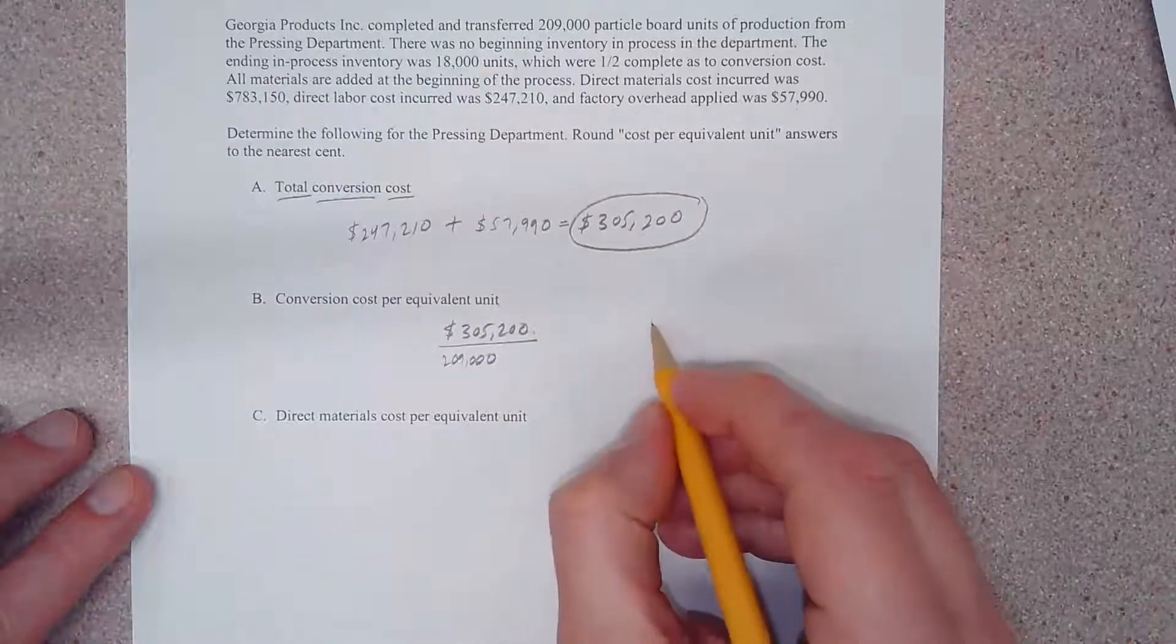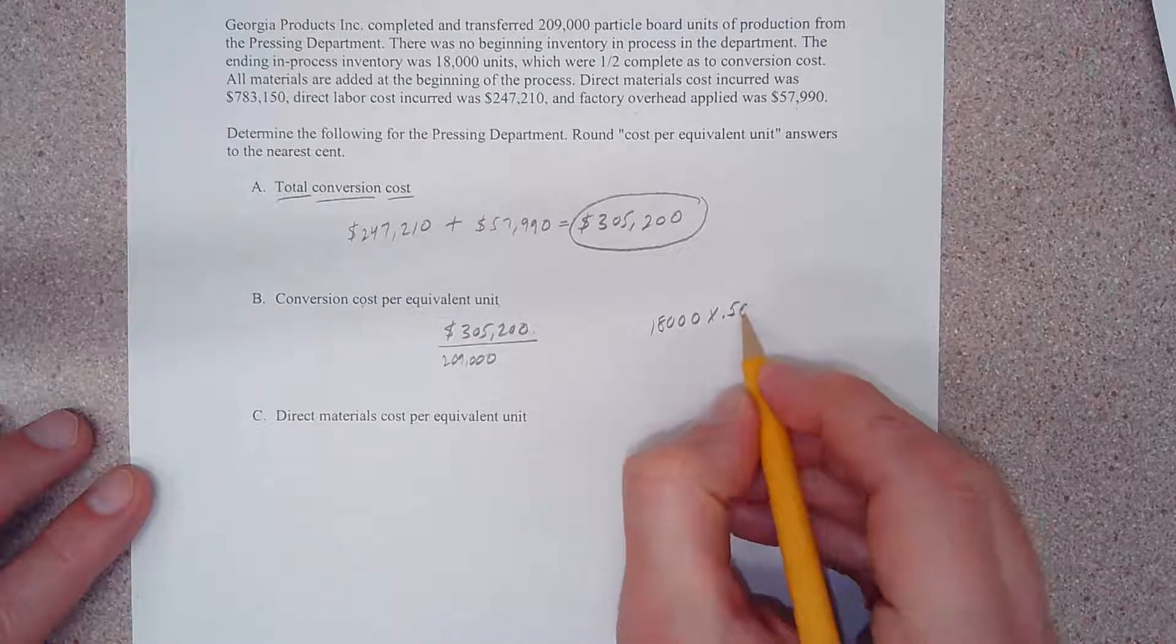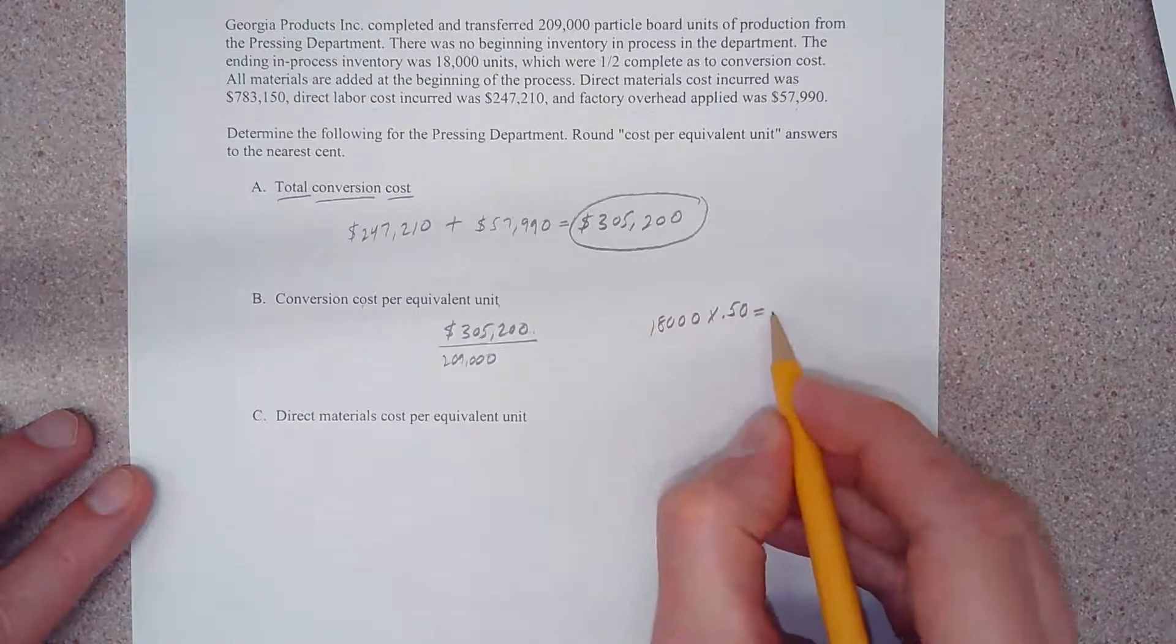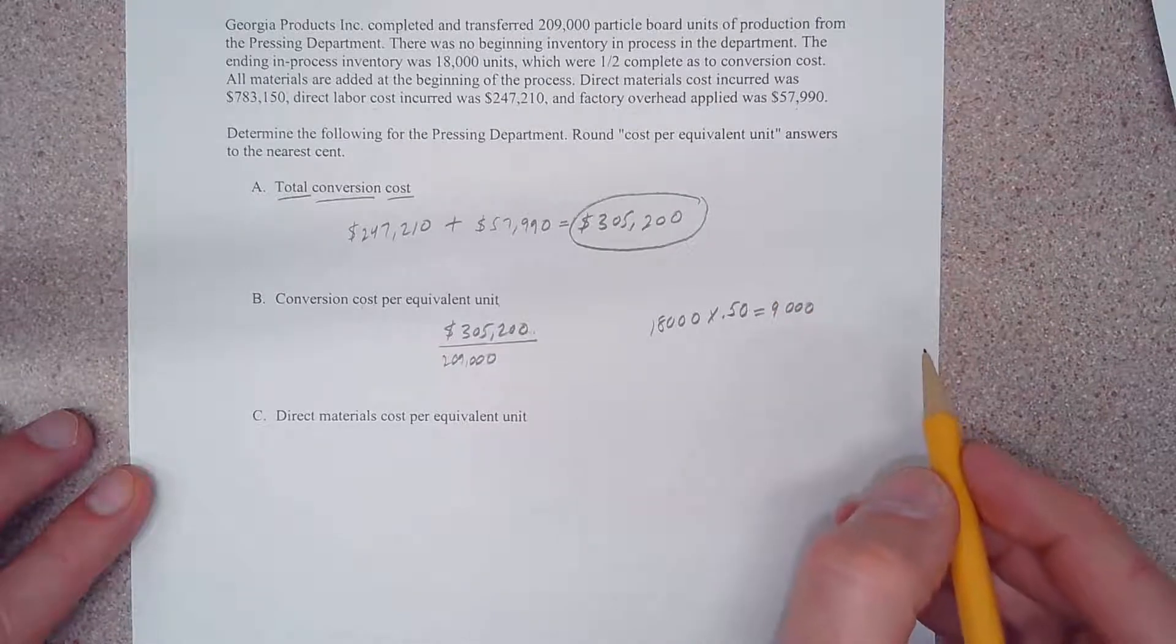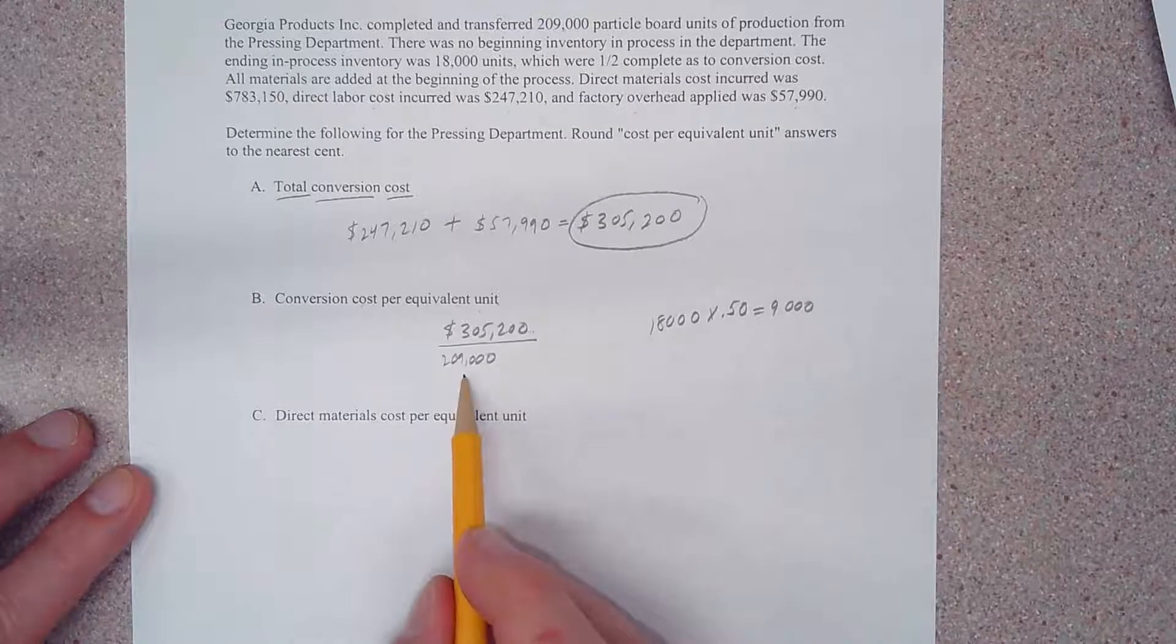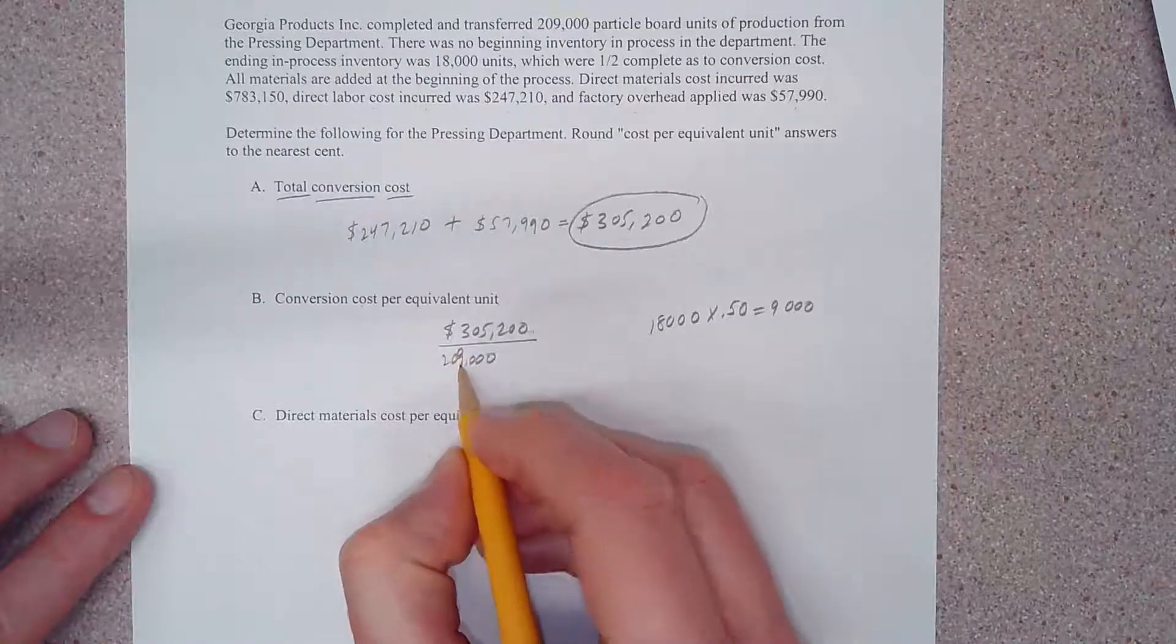So let's take this 18,000 and multiply that by 0.5 or 50 percent, and if we do that we'll come up with 9,000. So we have 209,000 that are fully complete, 100 percent complete in every way, but we also have another 9,000 units that are equivalent units—18,000 that are 50% complete.